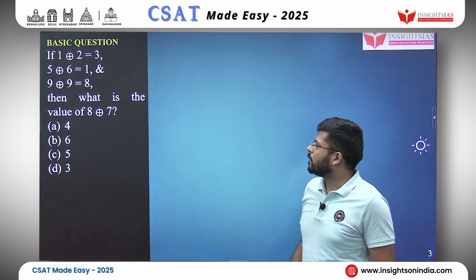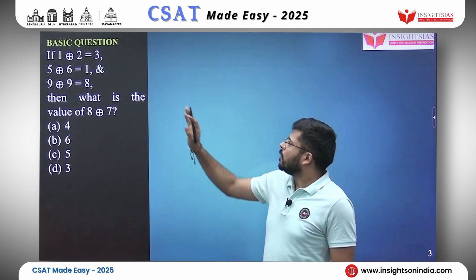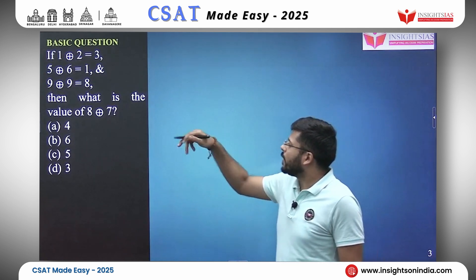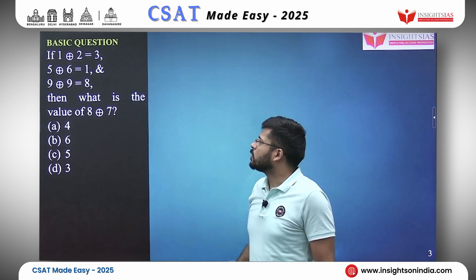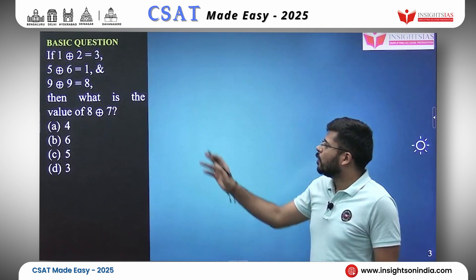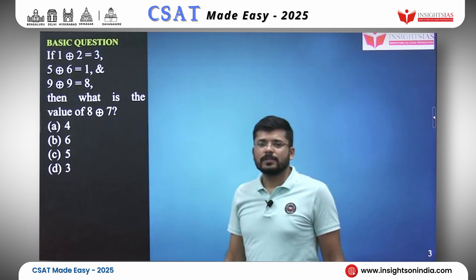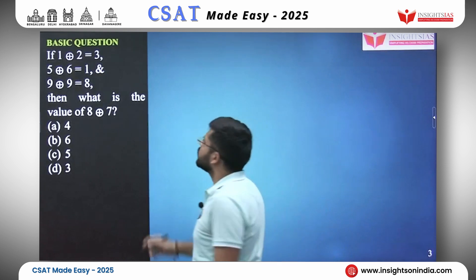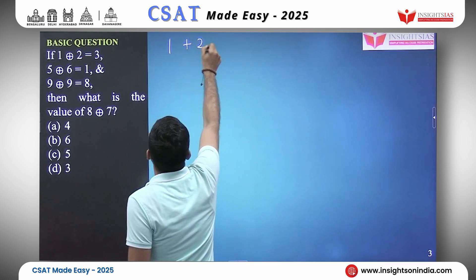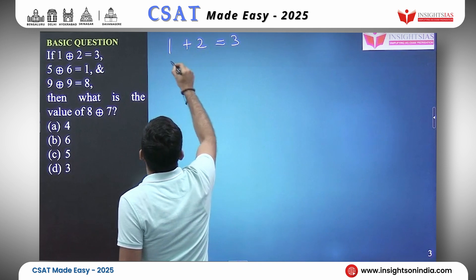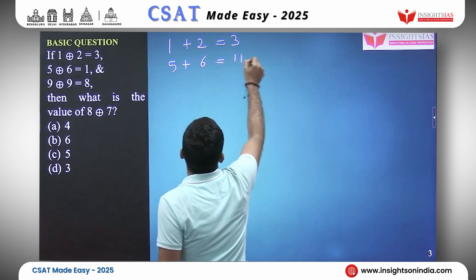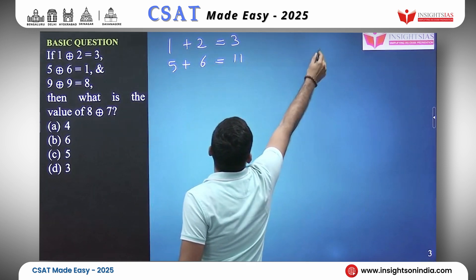The next question looks very similar to the previous one: 1 circled-plus 2 equals 3, 5 circled-plus 6 equals 1, and 9 circled-plus 9 equals 8. What is the value of 8 circled-plus 7? Again, 1 plus 2 is 3 — correct. But 5 plus 6 is 11 and they have 1.